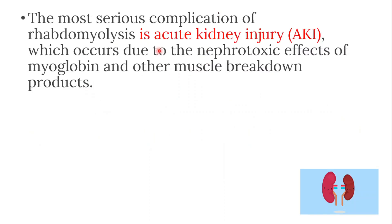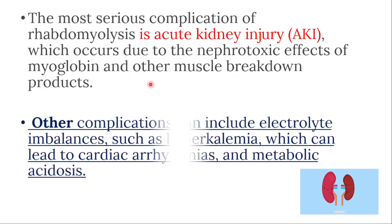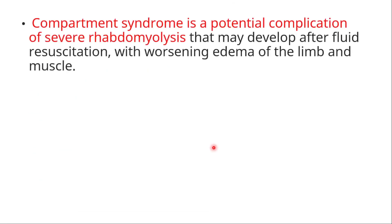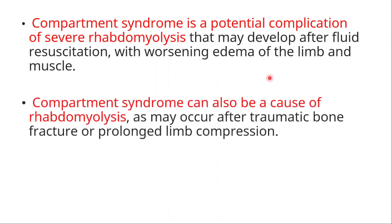The most serious complication is acute kidney injury, which occurs due to the nephrotoxic effects of myoglobin and other muscle breakdown products. Other complications include electrolyte imbalances such as hyperkalemia — high potassium — which can lead to cardiac arrhythmias and metabolic acidosis. Compartment syndrome is also a potential complication of severe Rhabdomyolysis that may develop after fluid resuscitation, but it can also be a cause, occurring after traumatic bone fracture or prolonged limb compression.